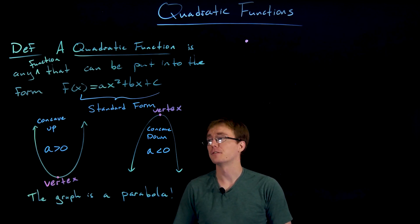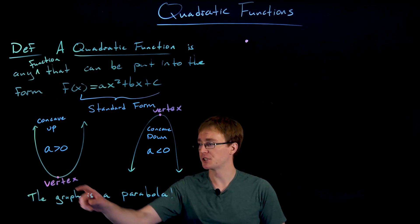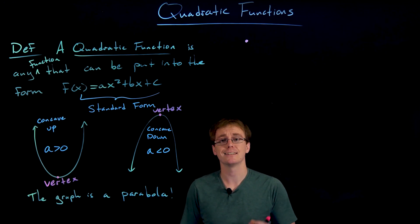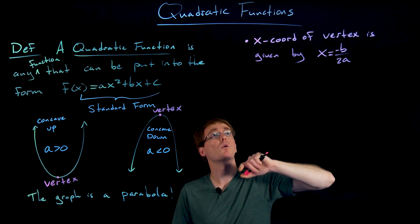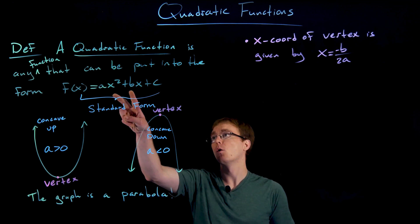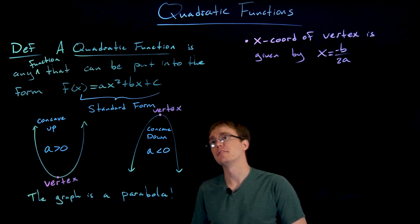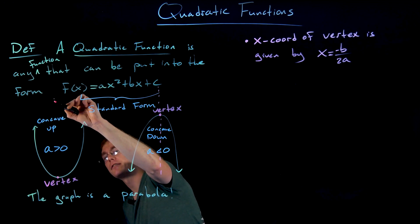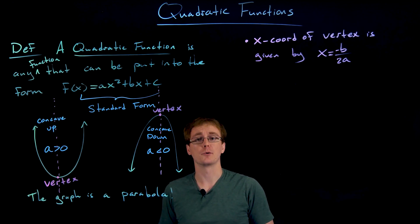We're going to want to know how to find the vertex point for our parabolas, especially when using quadratic functions to model a situation where we need the minimum or maximum. The x-coordinate of our vertex is always given by x = -b / 2a when our quadratic function is in standard form. This equation x = -b / 2a also gives us a vertical line, which we refer to as the line of symmetry for our parabola.